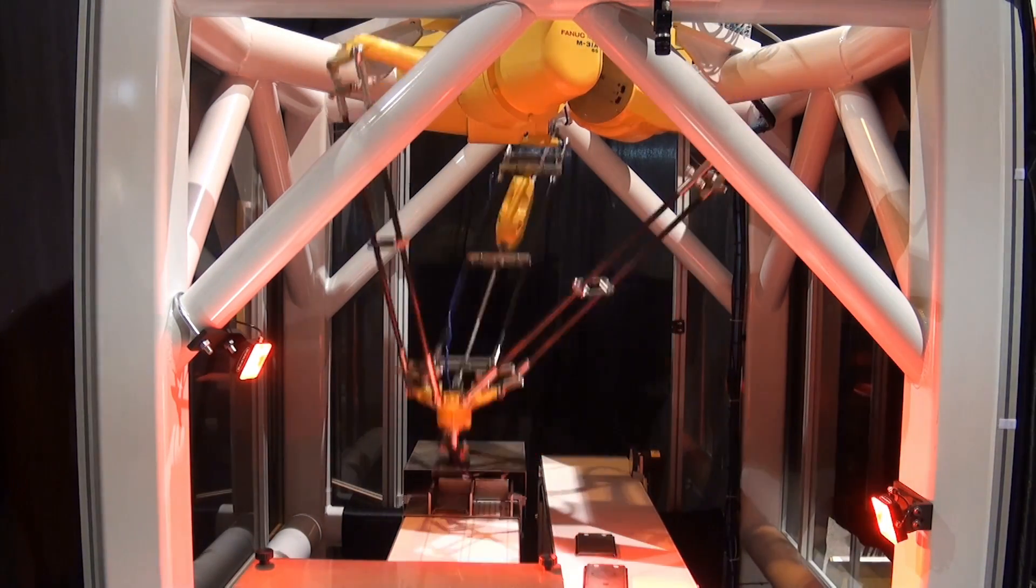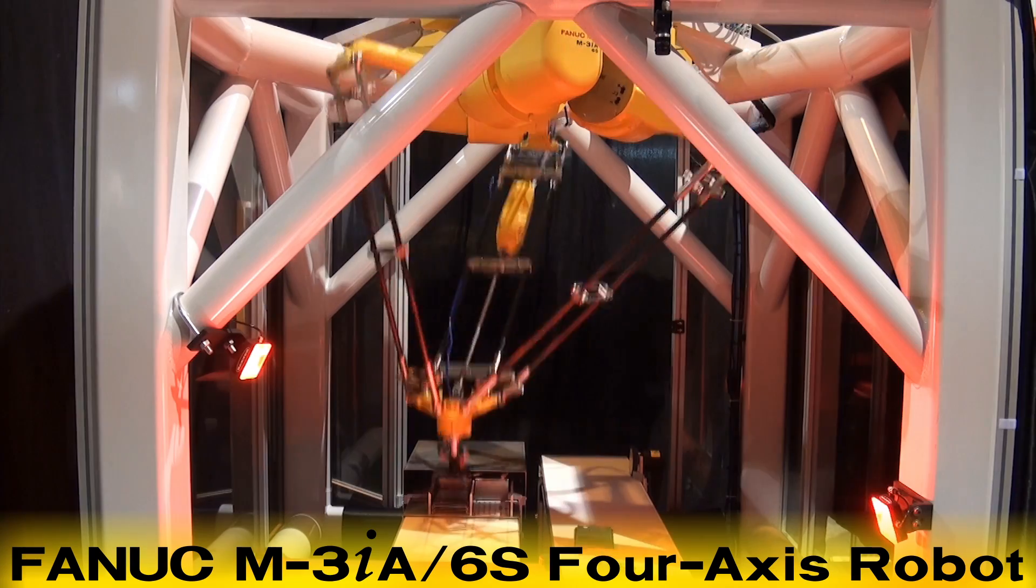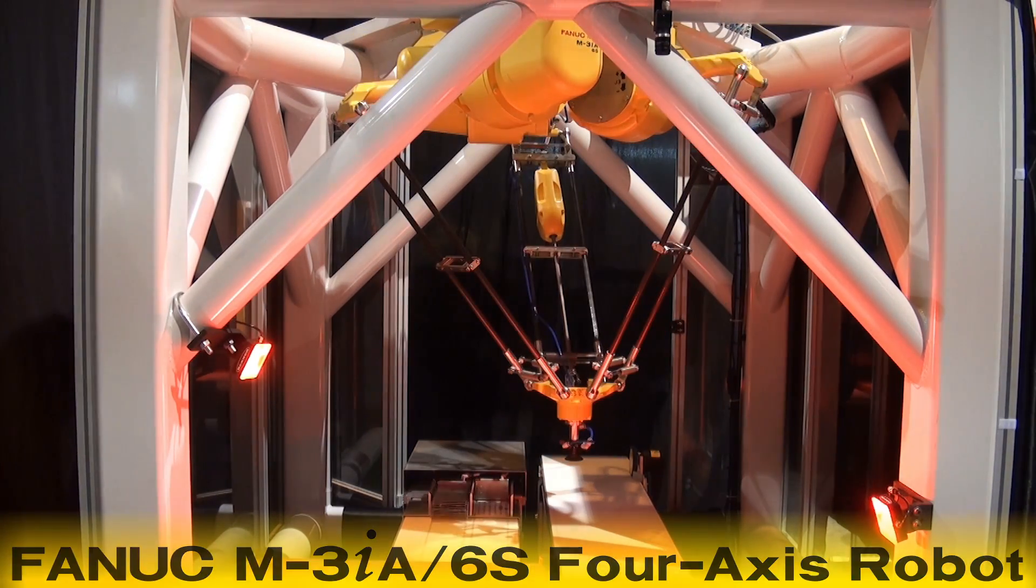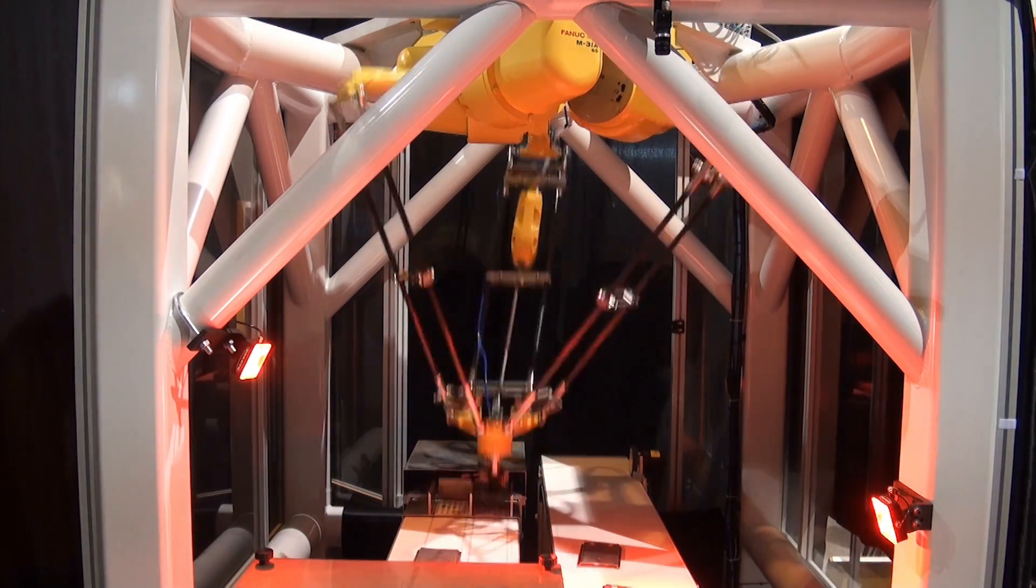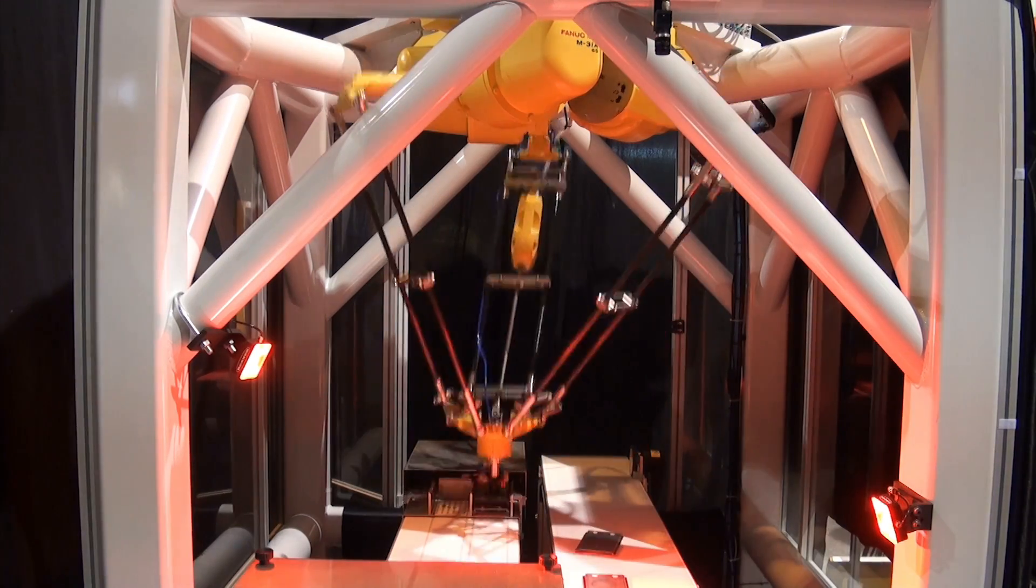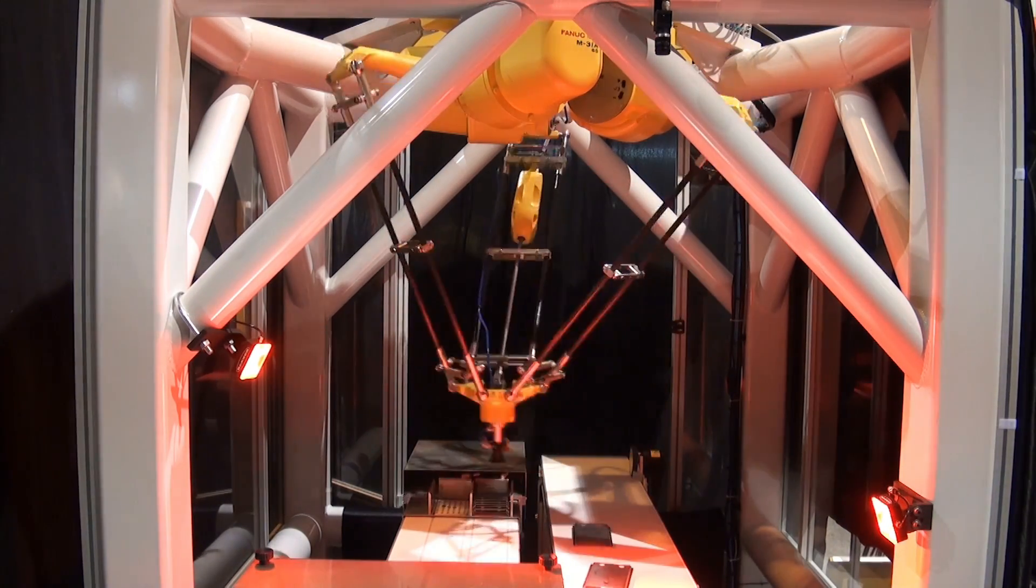This robotic demonstration cell features the FANUC M3IA-6S 4-axis robot as it locates and picks randomly oriented stamped parts from an infeed conveyor and stacks them into two different nests.